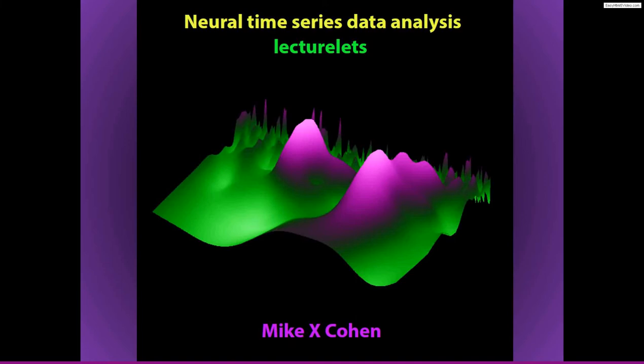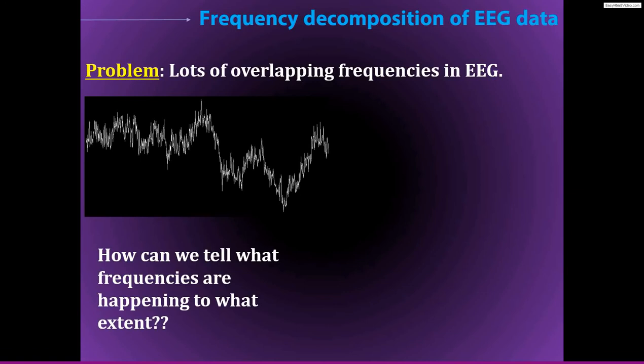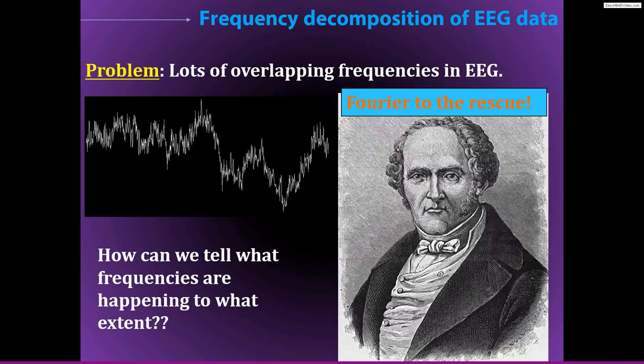We've discussed that EEG data can be represented as a sum of many sine waves, each with a different frequency, phase, and amplitude. But we also learned that there are lots of overlapping frequencies in the EEG signal. So how do we determine what frequencies are present in the signal and to what extent?